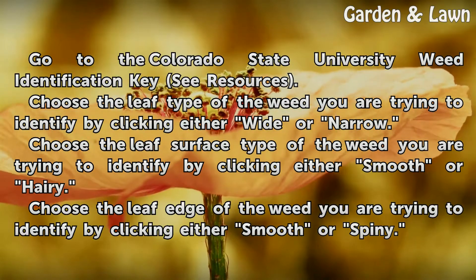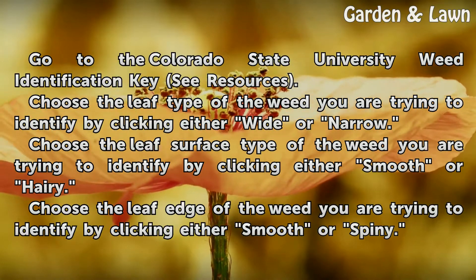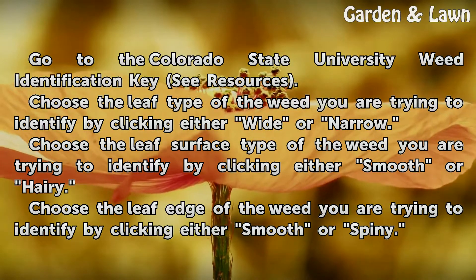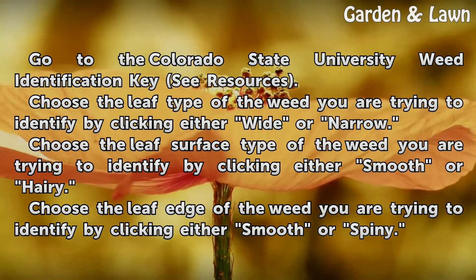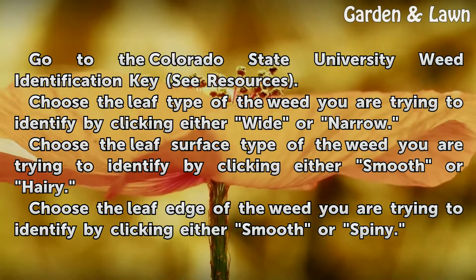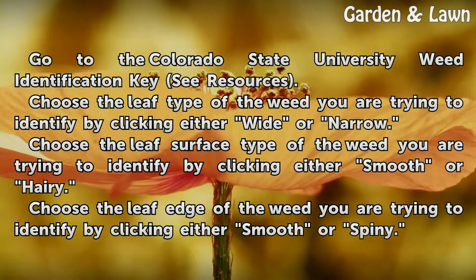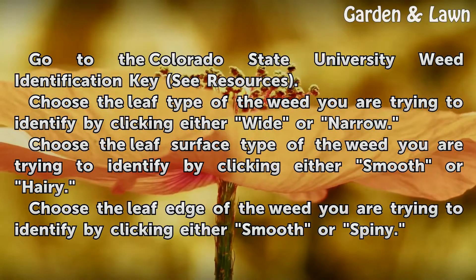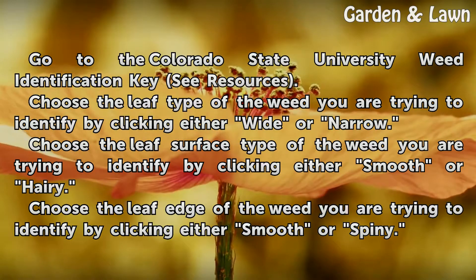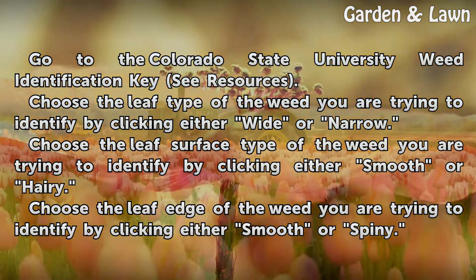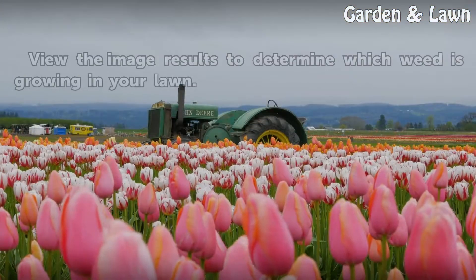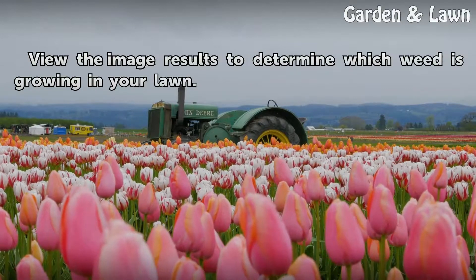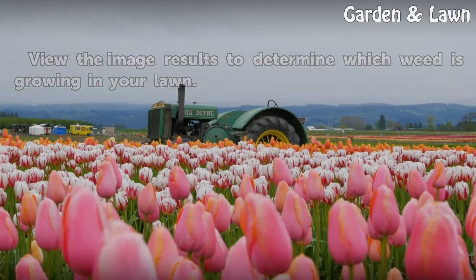Go to the Colorado State University Weed Identification Key (see resources). Choose the leaf type of the weed you are trying to identify by clicking either wide or narrow. Choose the leaf surface type by clicking either smooth or hairy. Choose the leaf edge by clicking either smooth or spiny. View the image results to determine which weed is growing in your lawn.